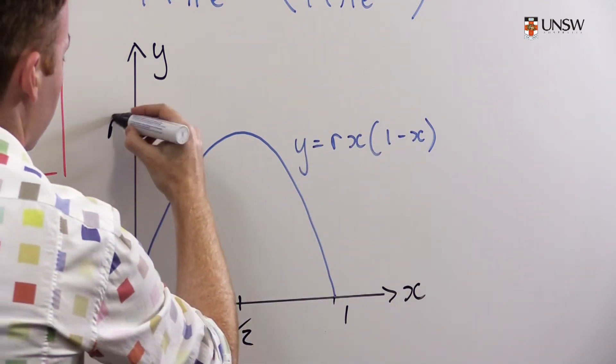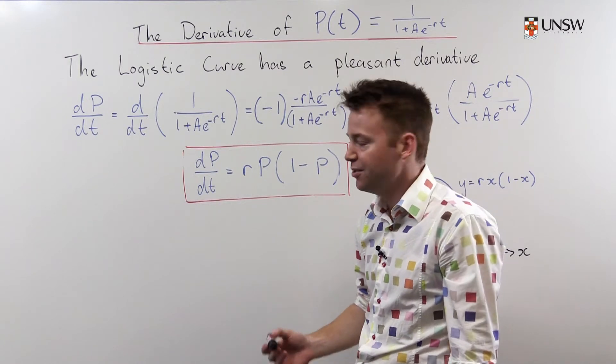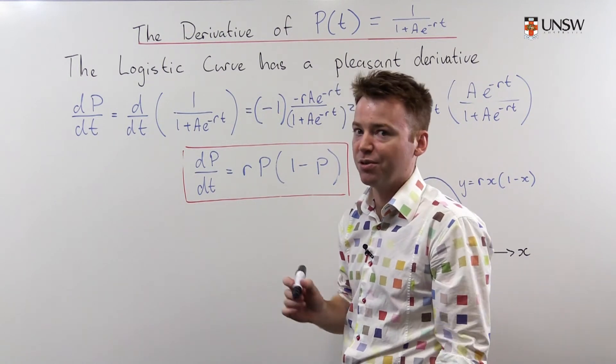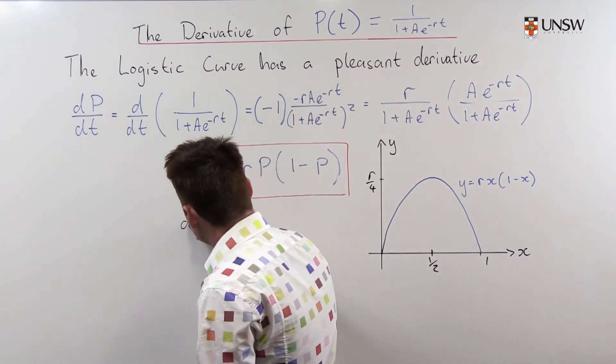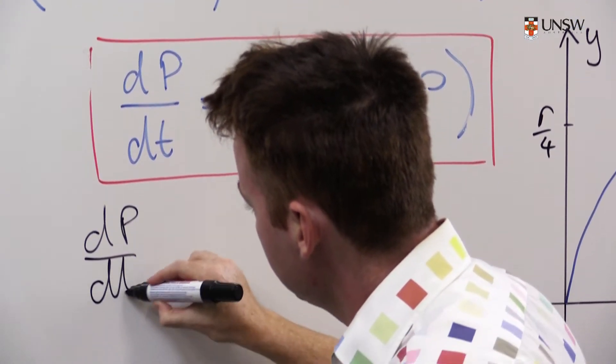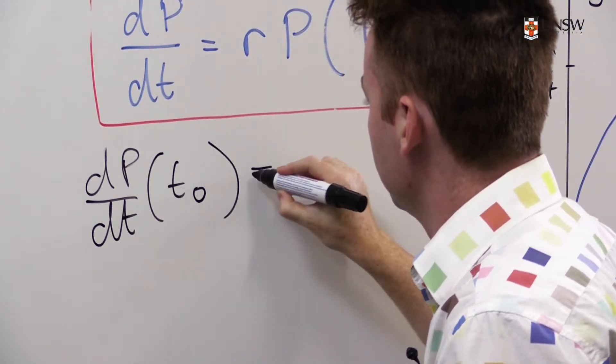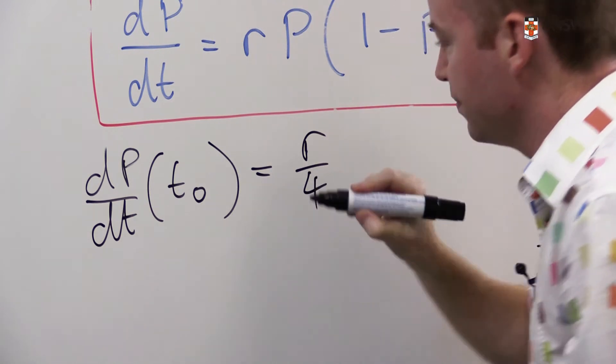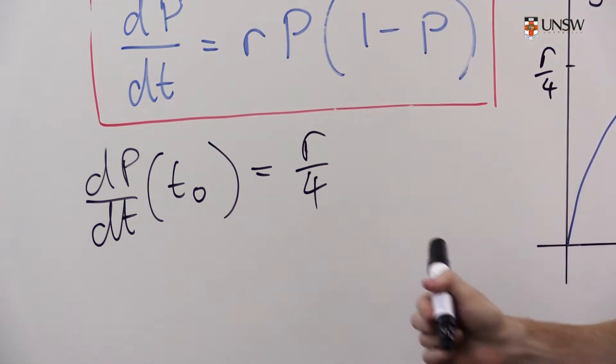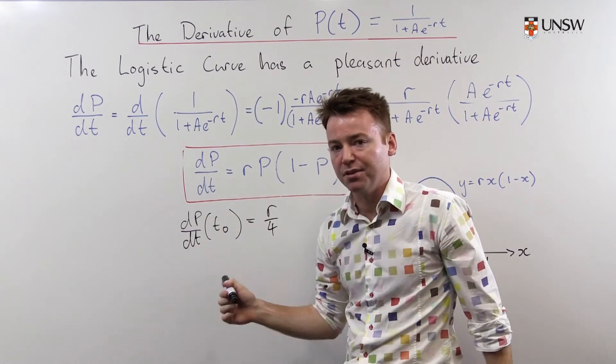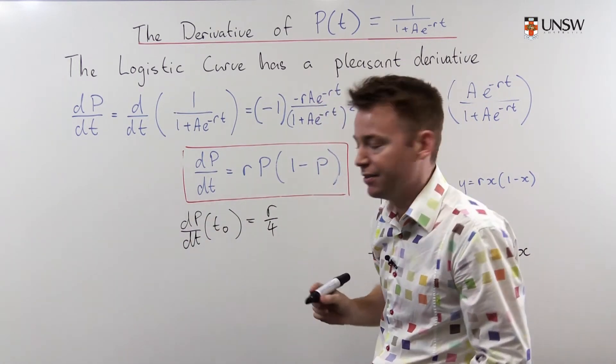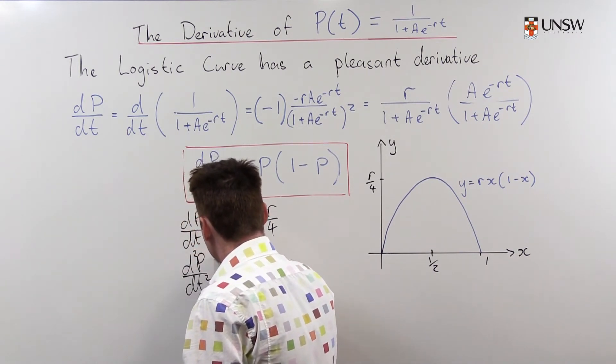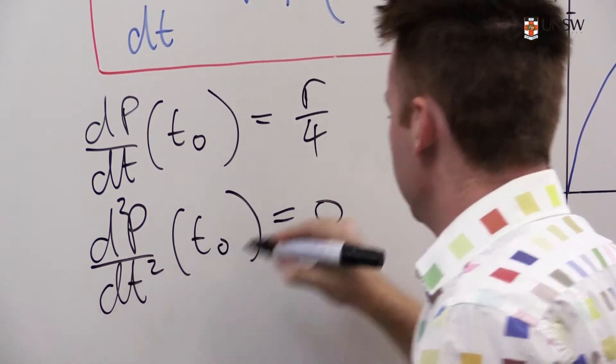So we've established something quite interesting about this derivative. It achieves its maximum when P is equal to 1 half, which we recall is the midpoint. So we know that dP/dt at our midpoint t0 is equal to r times 1 half times 1 half. So that's r over 4. We've also established something quite interesting, which is that this is the maximum of the derivative, which tells us that the second derivative is 0. So d²P/dt² at t0 is equal to 0.